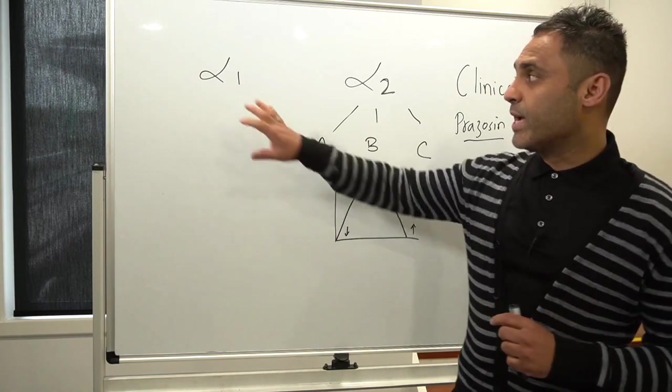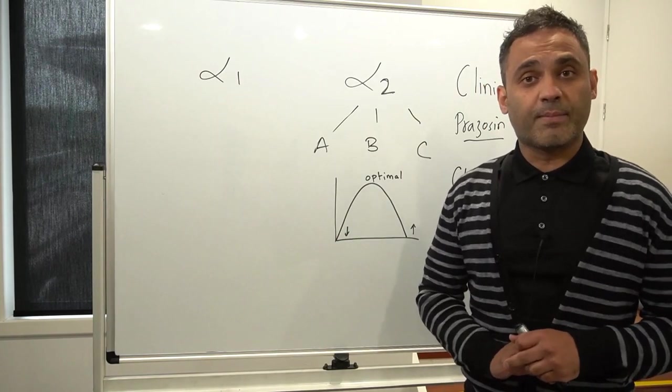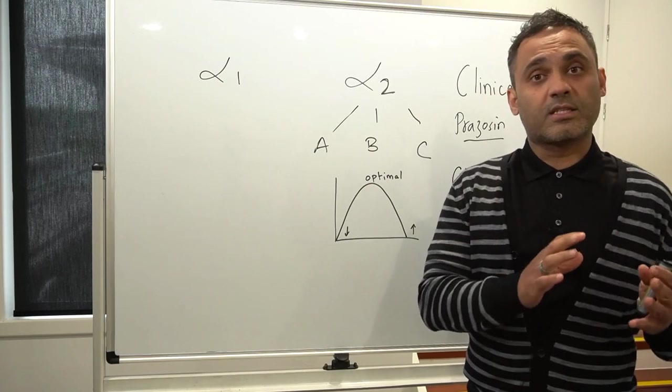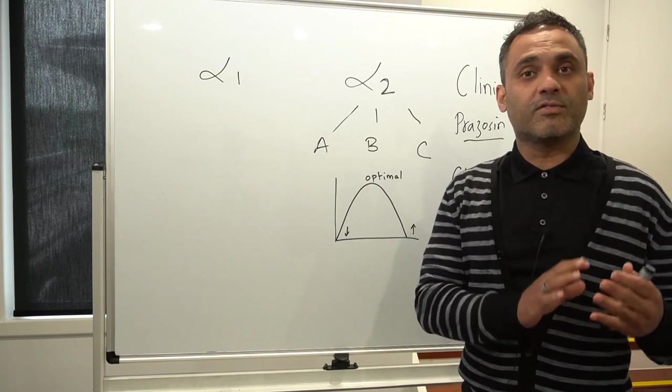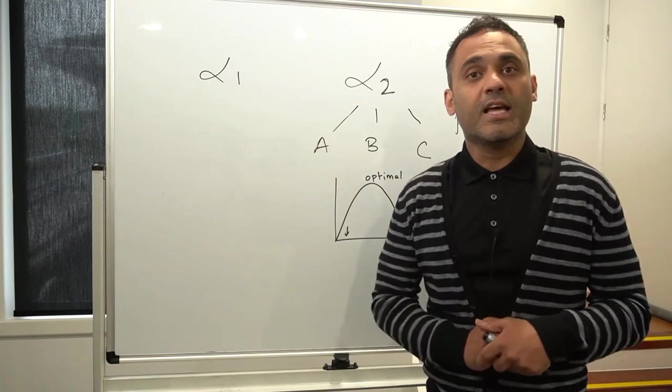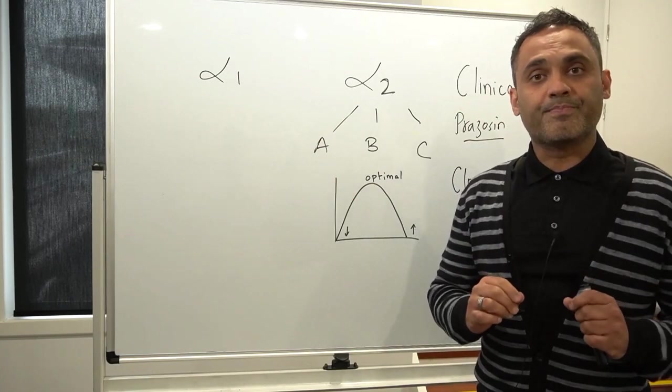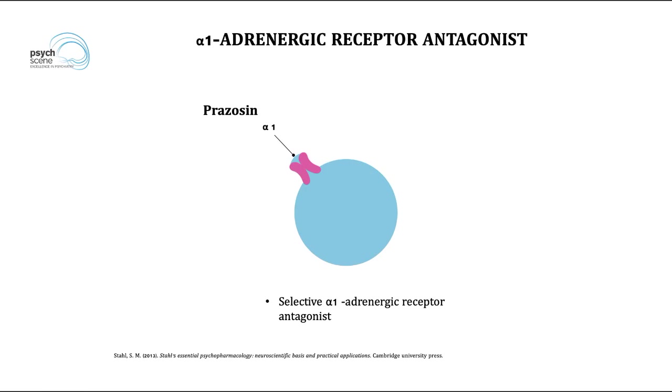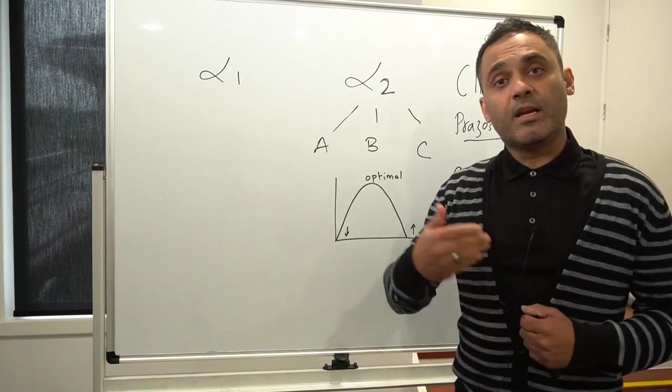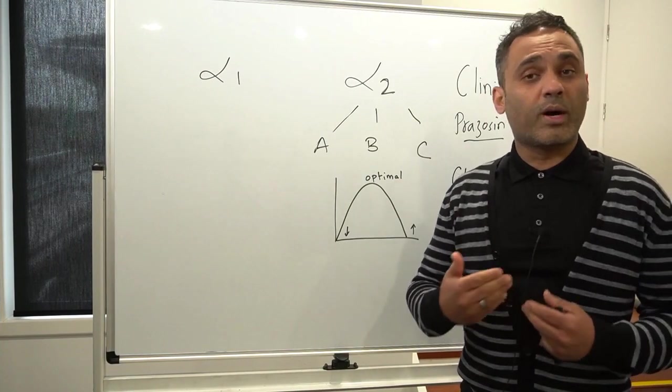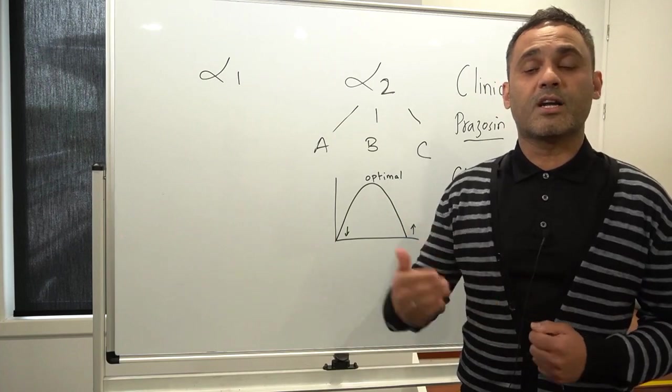Therefore, if we antagonize this particular receptor we can actually prevent or treat these negative effects. Prazosin is the alpha-1 adrenergic antagonist that is used in clinical practice and hence is used in post-traumatic stress disorder quite effectively to treat nightmares and hyperarousal.